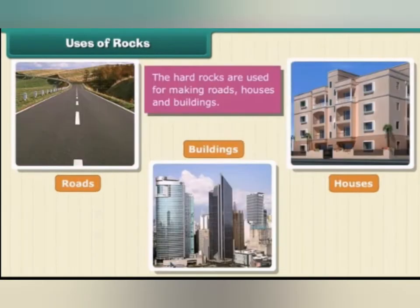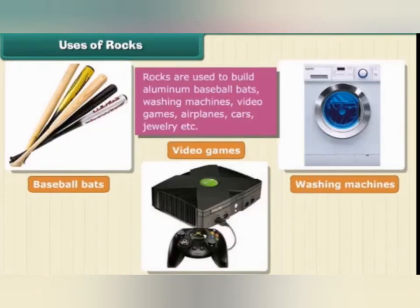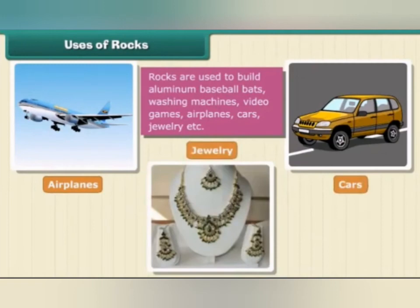Now let us look at some of the general uses of rocks. Hard rocks are used for making roads, houses and buildings. These are also used in making items such as baseball bats, washing machines, video games, airplanes, cars and jewelry. So this is about rocks and the different types of rocks. In the next class we are going to learn about minerals — metallic minerals, non-metallic minerals — and we are also going to learn about fossil fuels.